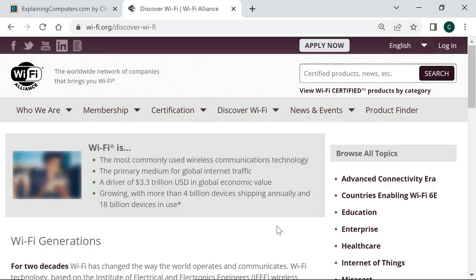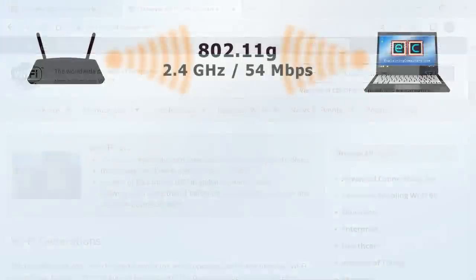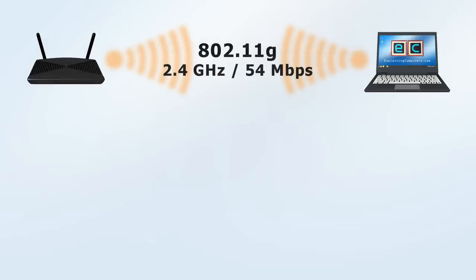As always in computing, standards continued to advance, and in 2003, 802.11g was introduced. Like 802.11b, this operates in the 2.4 GHz frequency band, but delivers a theoretical maximum speed of 54 Mbps — just like 802.11a.